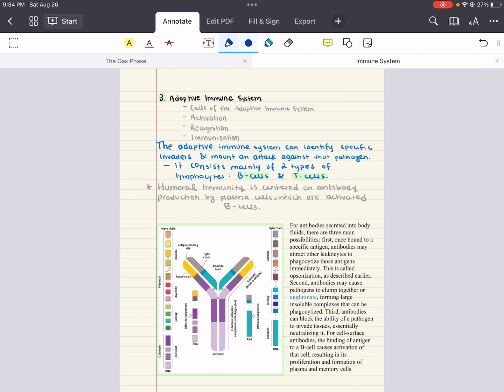The adaptive immune system can identify specific invaders and then mount an attack against that pathogen. The response is variable and depends on the identity of the pathogen. The adaptive immune system can be divided into two divisions: humoral immunity and cell-mediated immunity. Each involves identification of the specific pathogen and organization of an appropriate immune response.